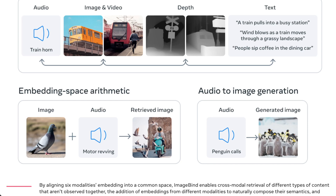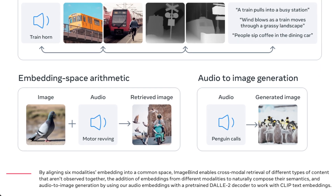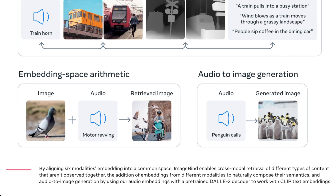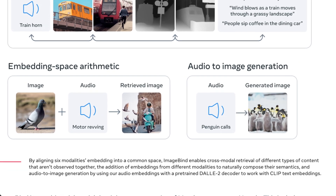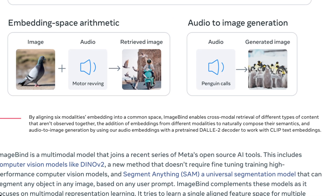They also show you can do pretty well without that. Embedding space arithmetic is basically spatial awareness of what's going on within a scene — how many subjects or background things you can have without clouding the environment. They state: by aligning six modalities' embeddings into a common space, ImageBind enables cross-modal retrieval of content not observed together, and audio-to-image generation using their audio embeddings with a pre-trained DALL-E 2 decoder to work with CLIP text embeddings works pretty well.